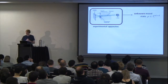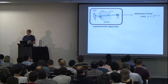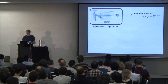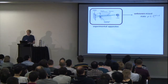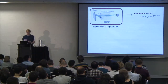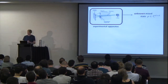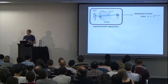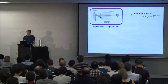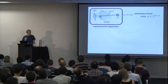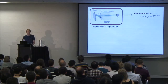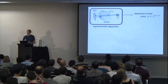So rho sits inside the space of d by d complex matrices. Maybe someone gave this experimental apparatus to you — you didn't construct it yourself — so you don't actually know what it does. Whenever you press this button, it outputs always the same rho, but you don't actually know what rho is.